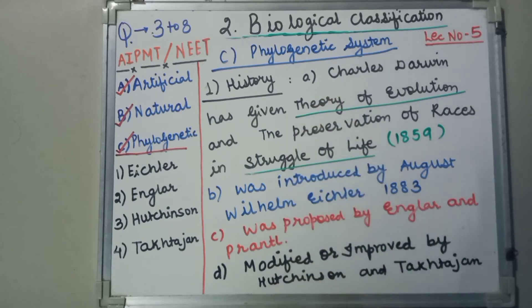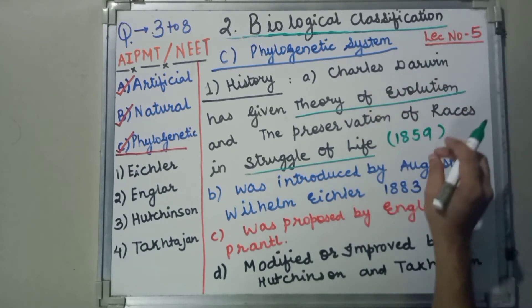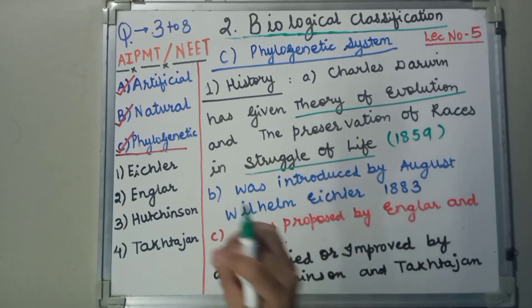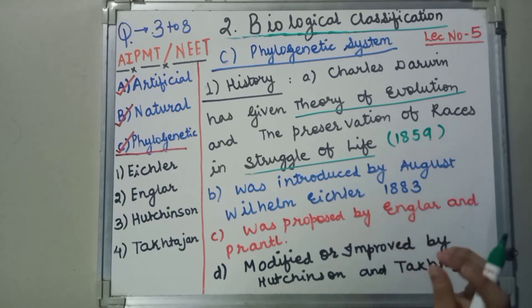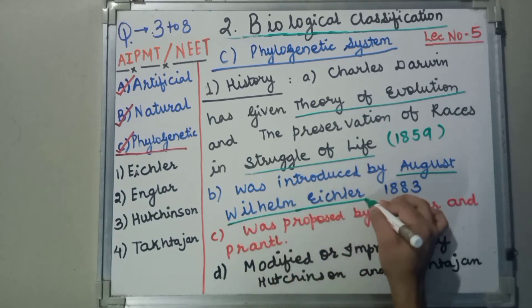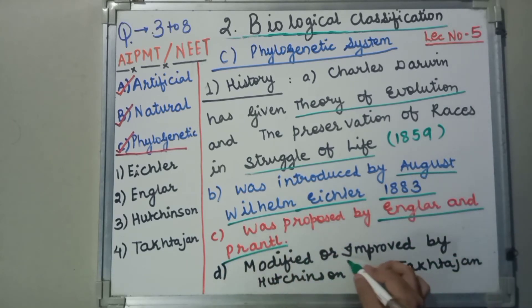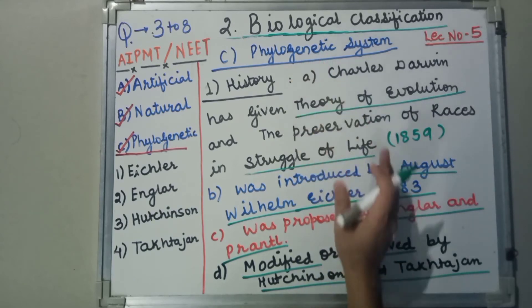Let's quickly revise the history of the phylogenetic system of classification. Since Charles Darwin wrote 'On the Origin of Species', we could get a concept where we could relate organisms to their ancestors. This discovery was put forward by August Wilhelm Eichler in 1883, proposed by Engler and Prantl, and improvements and modifications were done by Hutchinson and Takhtajan.